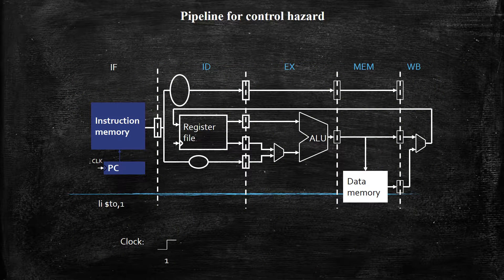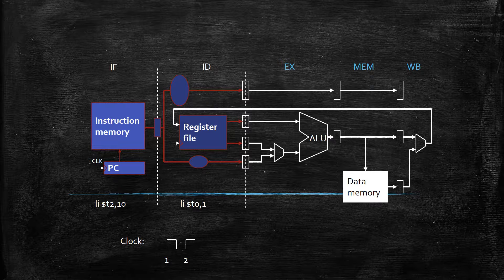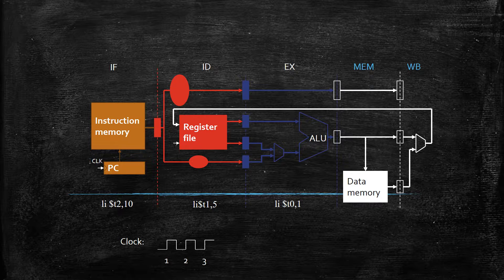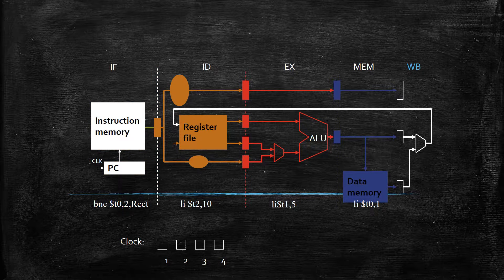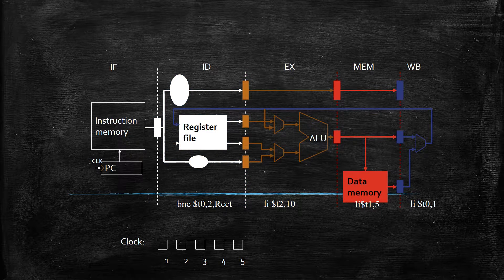This is what happens inside pipelining. For the first clock cycle, the load statement enters the instruction fetch stage. For the second clock cycle, the first load instruction moves to instruction decode stage and the second load instruction enters instruction fetch stage. Similarly, the third instruction enters instruction fetch stage and the first load instruction enters memory stage. During the fifth clock cycle, the first load instruction is processed and value 1 is stored in register T0, while the branch not equal condition enters decode stage.